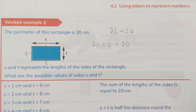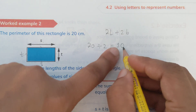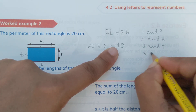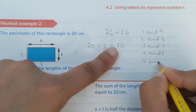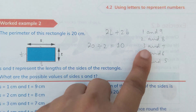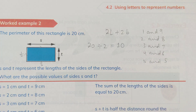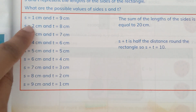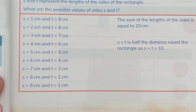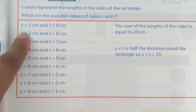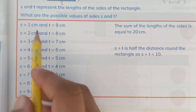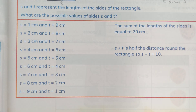We can make many possible combinations of lengths and breadths. We can split 10 into: 1 and 9, 2 and 8, 3 and 7, 4 and 6, 5 and 5, and so on. So it could be length 1 and breadth 9, length 2 and breadth 8, length 3 and breadth 7, and more. There are nine possible values of sides s and t. For any of these combinations, the perimeter will be 20 centimeters.